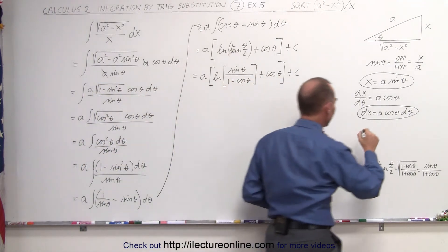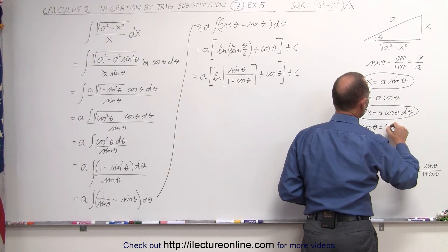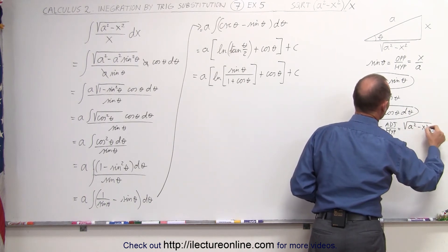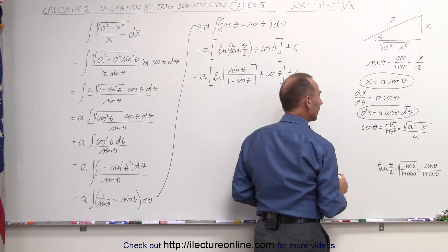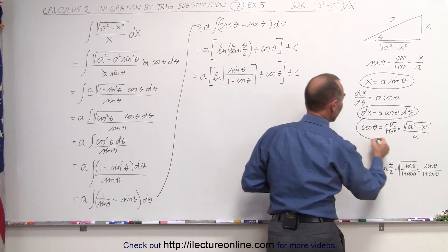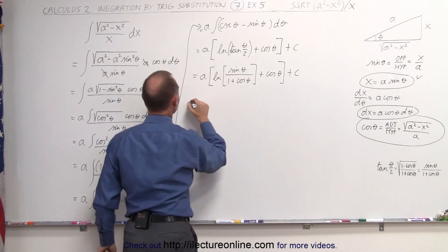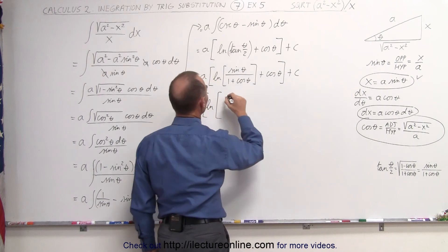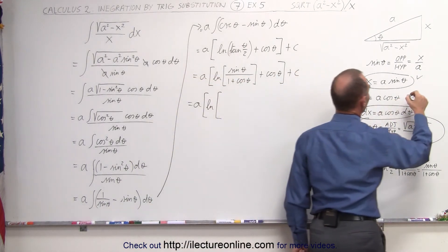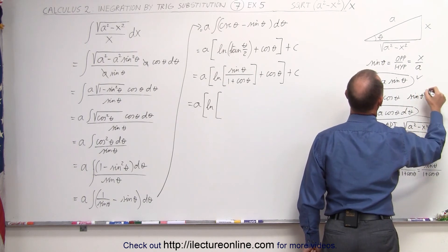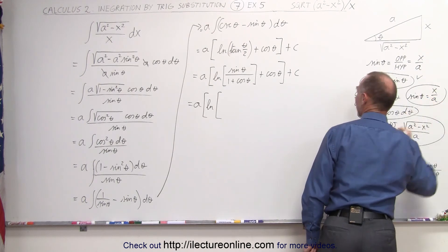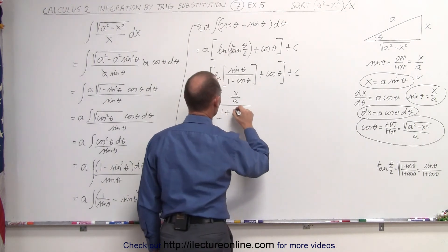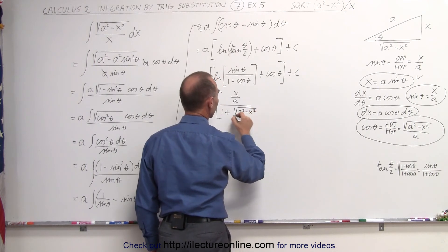All we need to do now is replace back what the sine and the cosine are in terms of x and a. The cosine of theta, by definition, is the adjacent side divided by the hypotenuse. In this case, the adjacent side is the square root of a squared minus x squared, and the hypotenuse is a. The sine of theta is equal to x over a. So we substitute: the argument becomes x over a, divided by one plus the square root of a squared minus x squared over a.